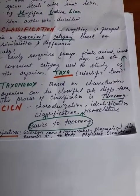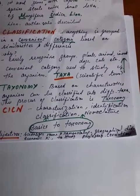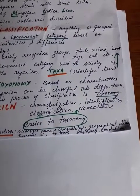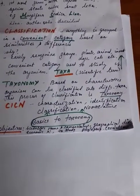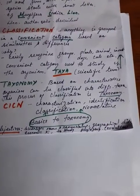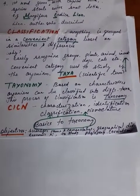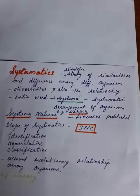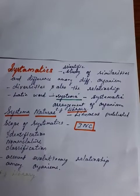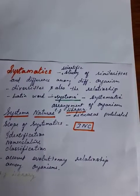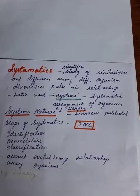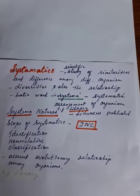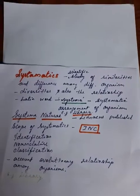What is the objective of taxonomy? Scientific names and nomenclature can be assigned based on taxonomic principles. Geographical distribution can be identified, we can know the economic importance of plants, and we can study phylogeny — the evolution of plants. What is systematics? Systematics is the scientific study of similarities and differences among organisms, including diversity and evolutionary relationships.